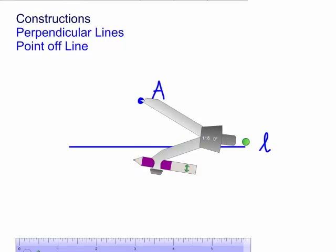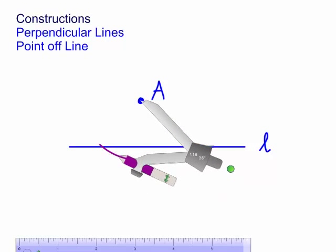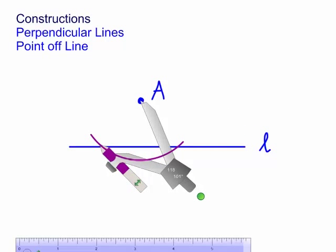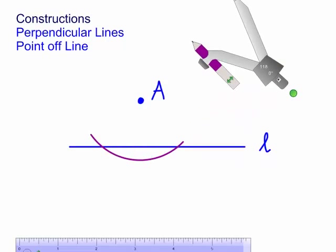And I need to draw an arc which crosses L. Here we go. And I would label these new points B and C.